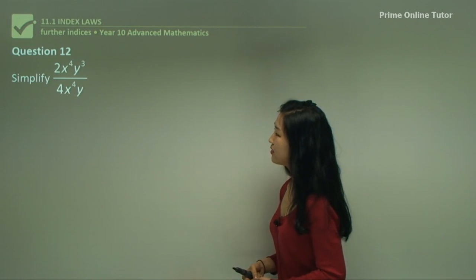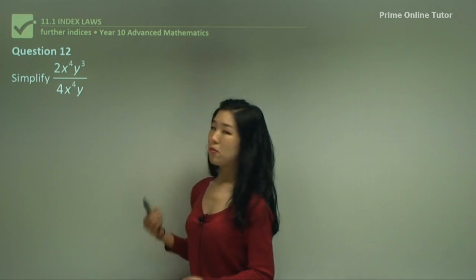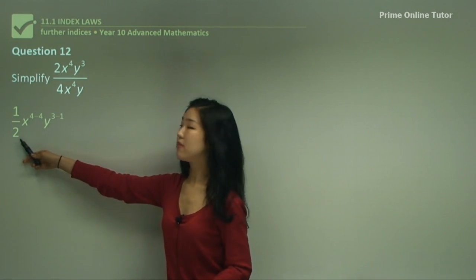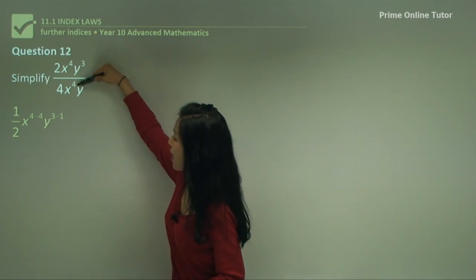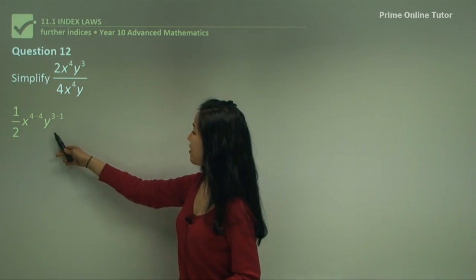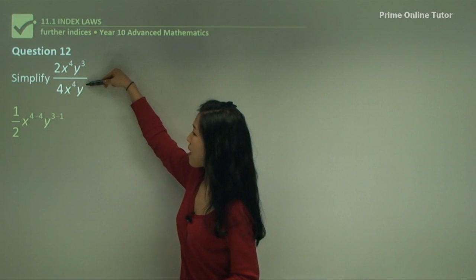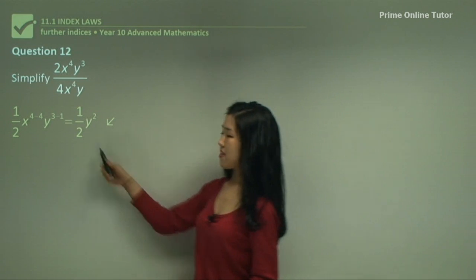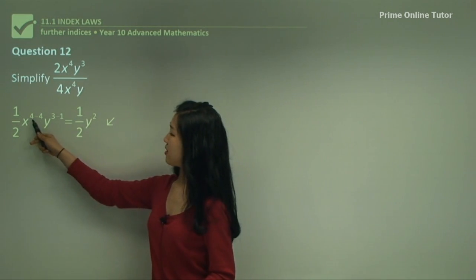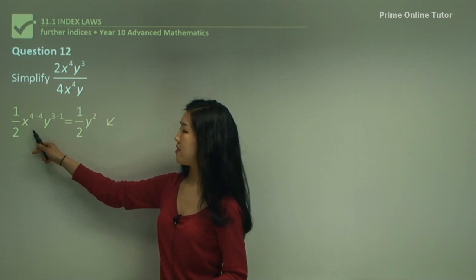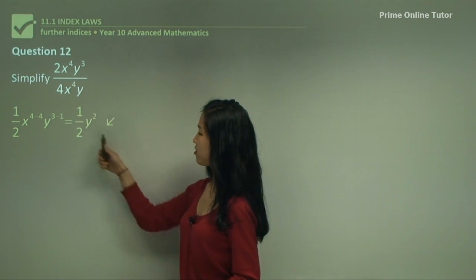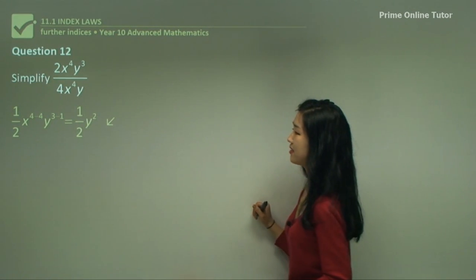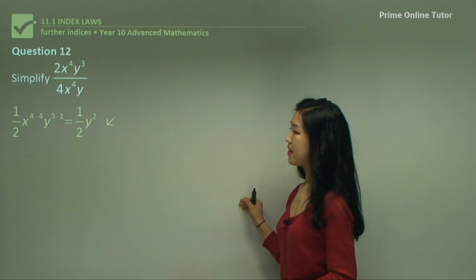Question twelve. Simplify this again. Remember we put the coefficients together: 2 divided by 4 is a half. Then x will have a power of 4 minus 4, and y will have a power of 3 minus 1. There's no more x because 4 minus 4 is 0, and anything to the power of 0 is 1. So the x just becomes 1, leaving us with half y squared.